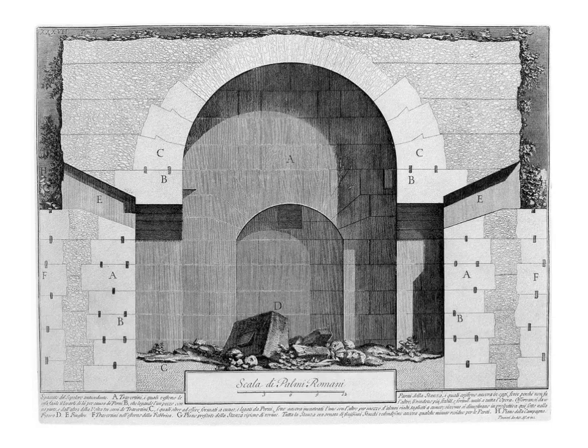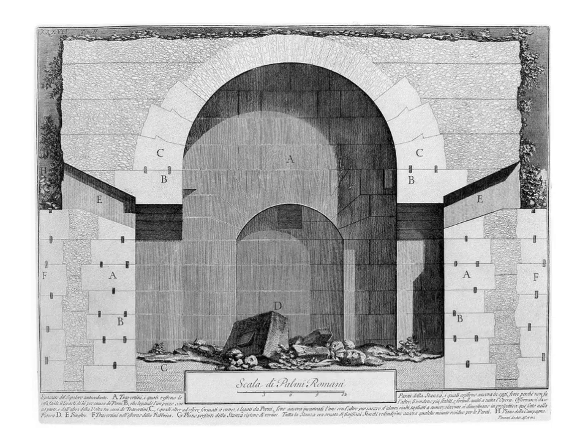I'm using this archaeological drawing of an old Roman tomb to help visualize what I mean by masonry. Notice the way the structure is embedded in the ground and how the courses of stone or brickwork run as even bands horizontally from top to bottom of the structure.